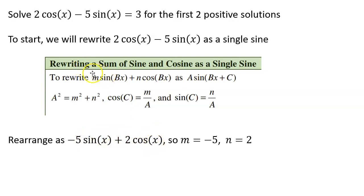which lets me identify that the coefficient on sine, which we're calling m here, is negative 5, and the coefficient on cosine is 2. So n is 2.